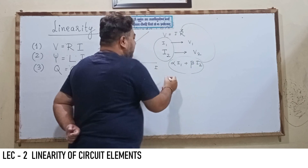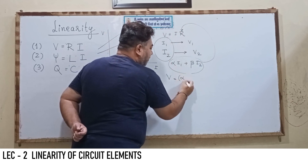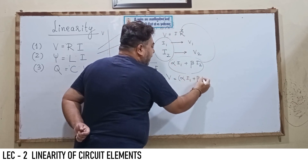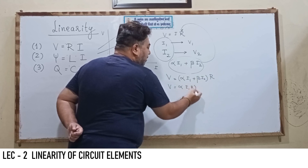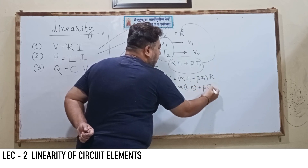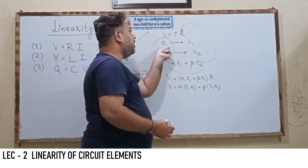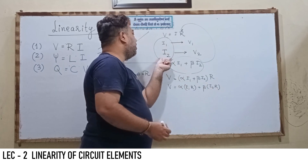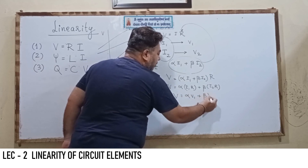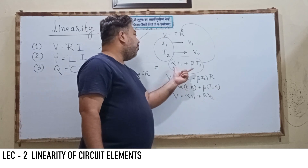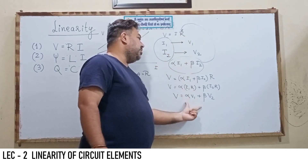When this linear combination alpha i1 plus beta i2 is applied to the resistor, the voltage v equals (alpha i1 + beta i2) times R, which gives alpha·i1·R plus beta·i2·R. Since i1·R equals v1 and i2·R equals v2, we get v equals alpha·v1 plus beta·v2. So we provide a linear combination of currents and get the same linear combination of voltages.